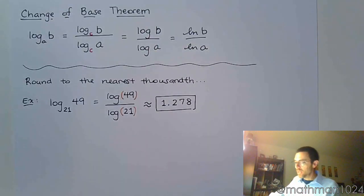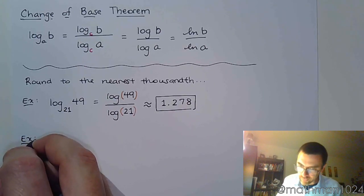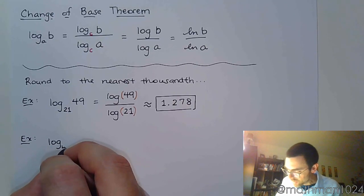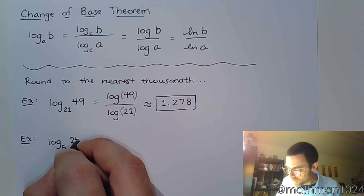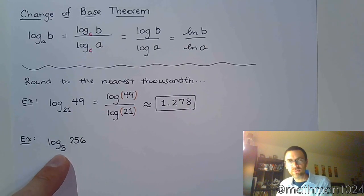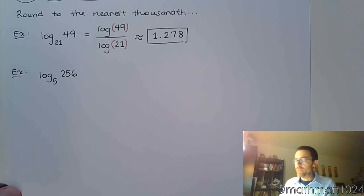So, let's try another example. If I have log base 5 of 256, my base here is 5 and there's no power of 5 that gives me 256 exactly. So we're going to need to do a change of base theorem again.